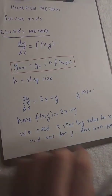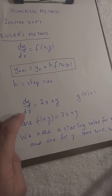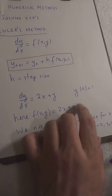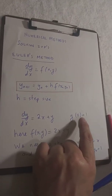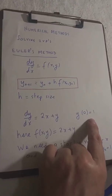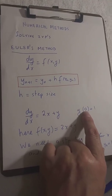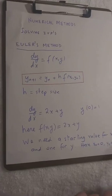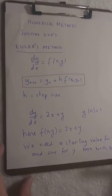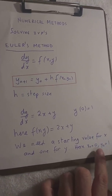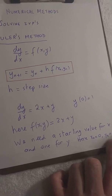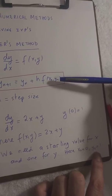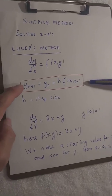For example, here's a DE: dy/dx equals 2x plus y, so f of xy is 2x plus y. They're telling us that y of 0 is 1. So our first value of x is 0, and our first value of y is 1. So x0 is 0 and y0 is 1.